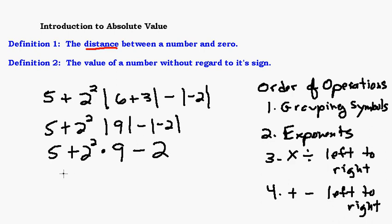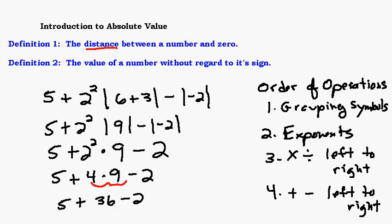Next step is multiplication: four times nine is thirty-six. So we have five plus thirty-six minus two. Now addition and subtraction left to right: five plus thirty-six is forty-one, minus two is thirty-nine. I hope you understand absolute value a little bit better from this video, and got a good review of your order of operations too.